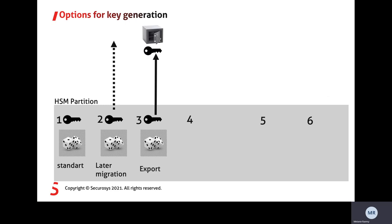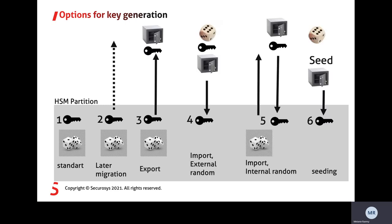That was a lot to take in, so we have that graphically as well. The options shown are: the standard operation with randomness within the HSM; migration option two, to later enable migration; the export for external use; the import where you created the key externally; the import where you use the random generator within the HSM; and the seeding.